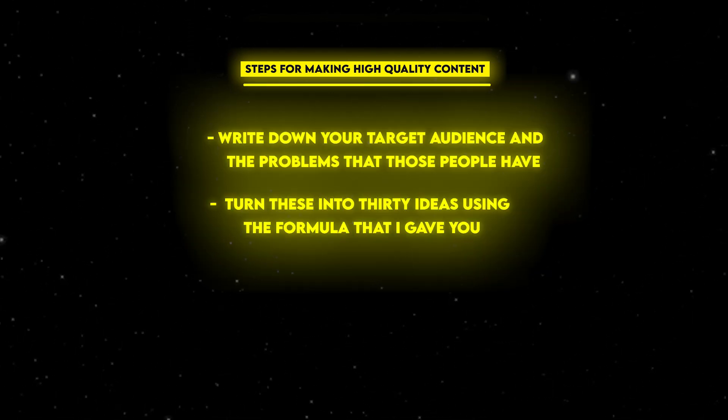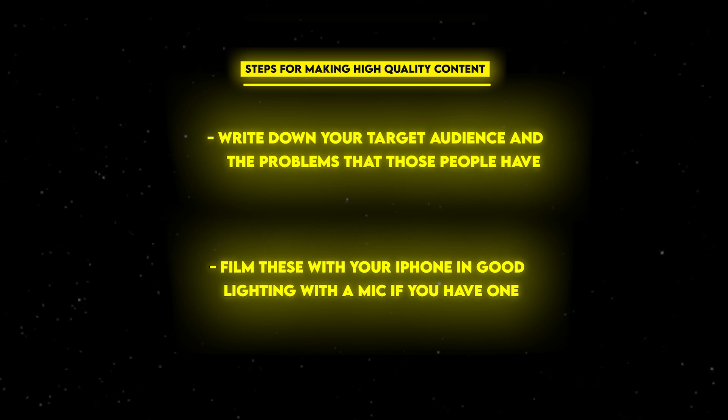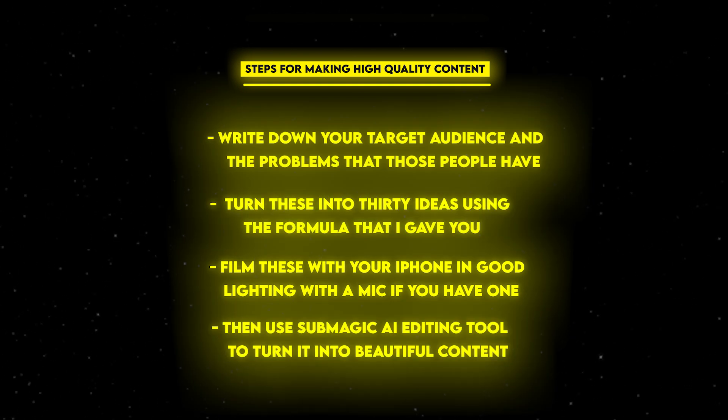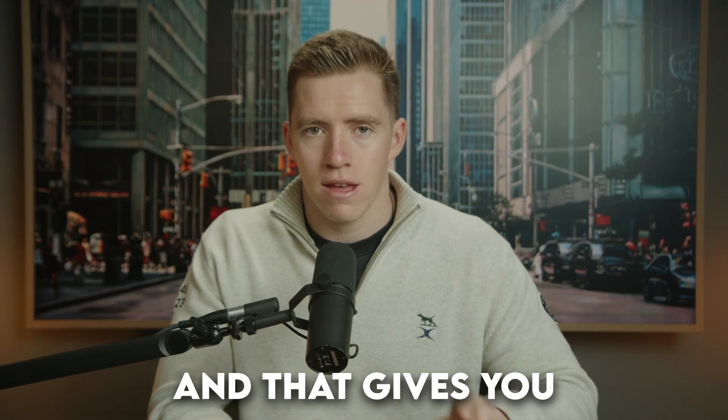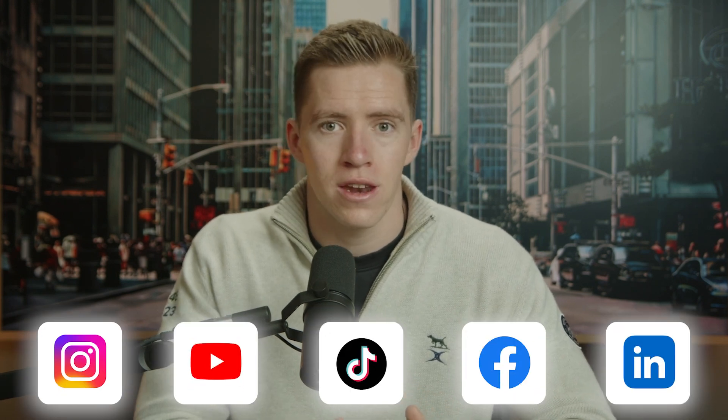In summary: write down your target audience and the problems they have, turn this into 30 ideas using the formula, film these with your iPhone in good lighting with a mic if you have one — don't overcomplicate the filming — then use Submagic's AI editing tool to create beautiful content. Within two to four hours you can have 30 high quality pieces of content ready to go. If you're posting every single day that gives you daily content. Then take this content and post it across Instagram, YouTube, TikTok, Facebook, and LinkedIn — and all of a sudden you've posted 150 pieces of content in one month with about three hours of work.